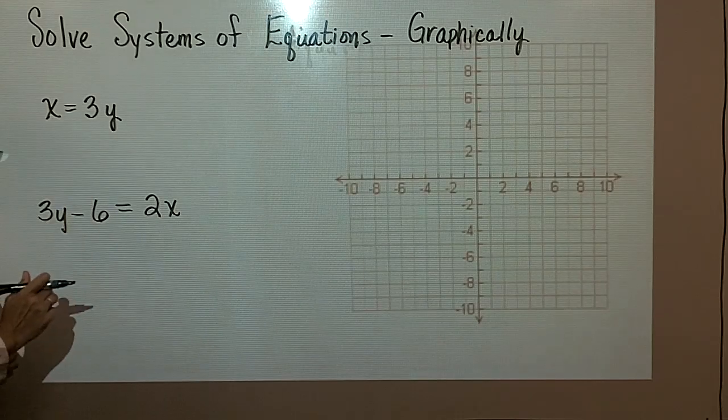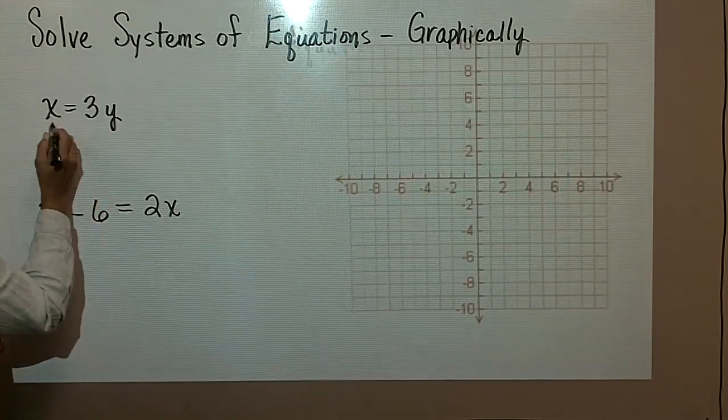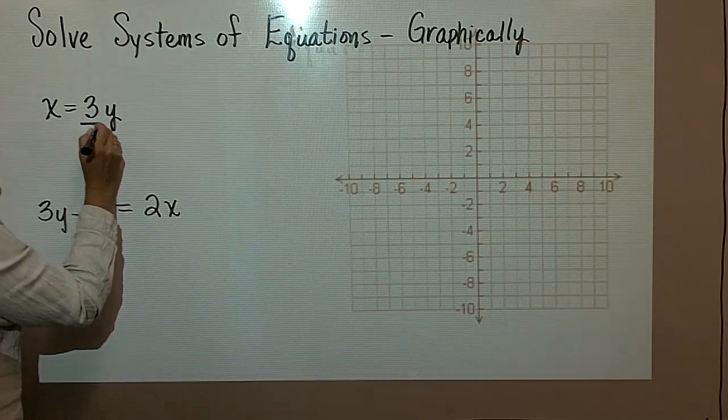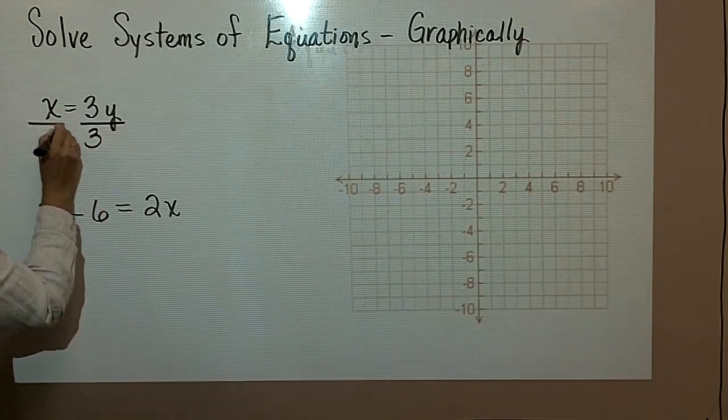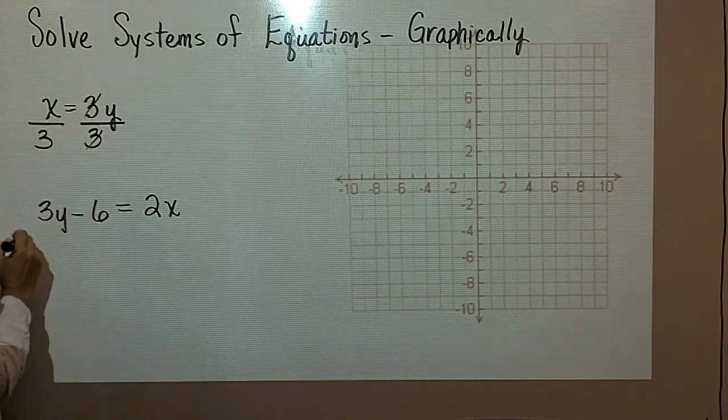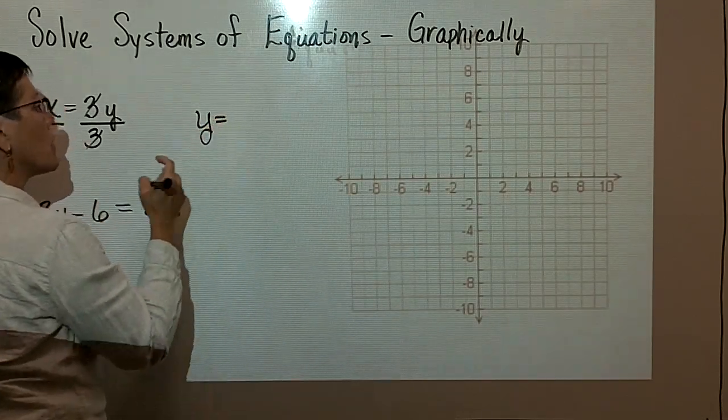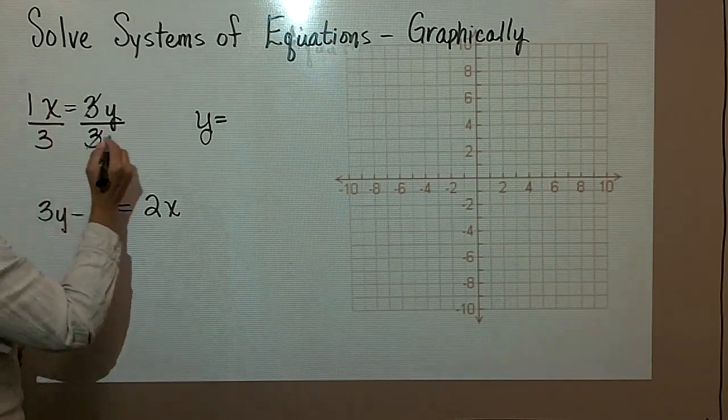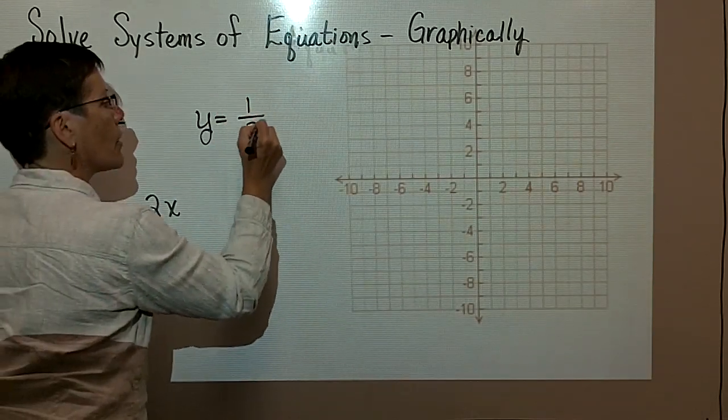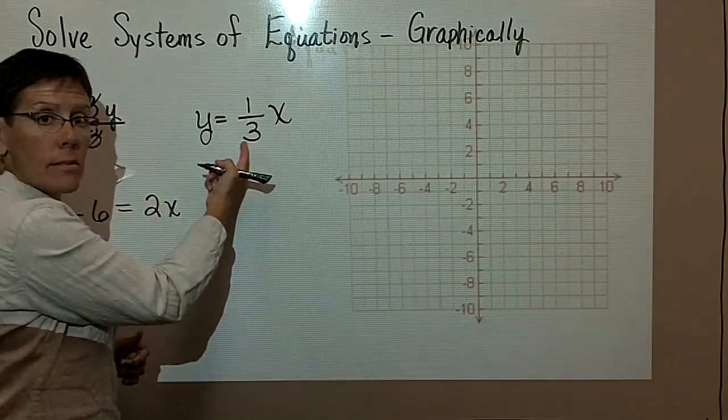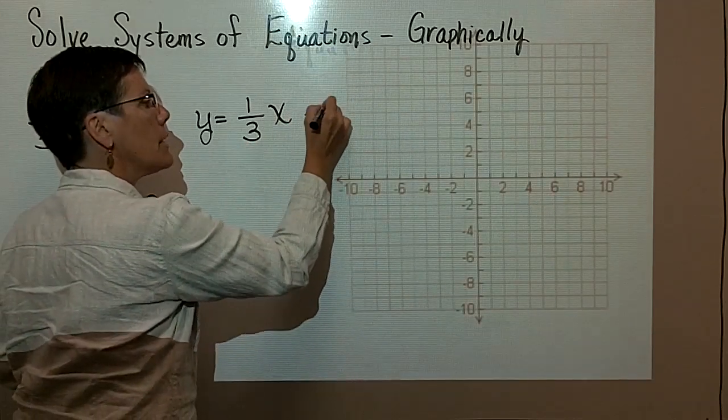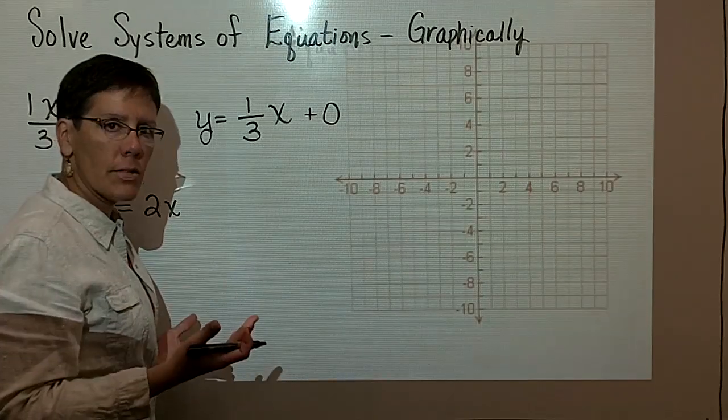So this particular equation right here, I am going to take x equals 3y, and I'm going to divide both sides by three in order to get y alone. So what I have for that equation, once it's rearranged, is y is equal to 1 over 3, 1 third x. This being the slope of the line and the y-intercept, because there's nothing here for b, is 0.